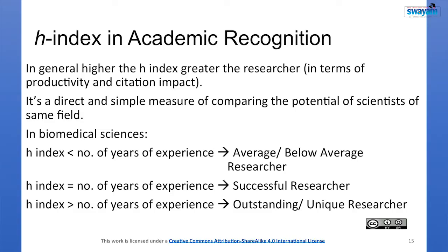In academic recognition, the higher the H-index, the greater the researcher in terms of productivity and citation impact. It is a direct and simple measure for comparing scientists of the same field. In biomedical sciences: H-index less than years of experience indicates below average; H-index equal to years of experience indicates a successful researcher; H-index greater than years of experience indicates an outstanding or unique researcher.